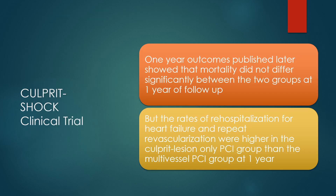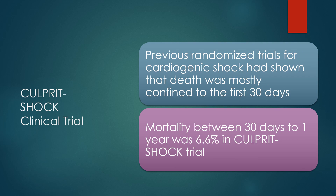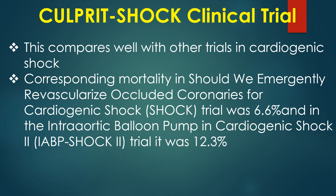One-year outcomes published later showed that mortality did not differ significantly between the two groups at one year of follow-up. But rates of rehospitalization for heart failure and repeat revascularization were higher in the culprit lesion only PCI group at one year. The rates of rehospitalization for heart failure were low and the absolute difference was small; it is not sure whether this difference was due to mortality bias. Mortality between 30 days to 1 year in cardiogenic shock was 6.6% in the CULPRIT-SHOCK trial, comparing well with the SHOCK trial (6.6%) and IABP-SHOCK 2 trial (12.3%).